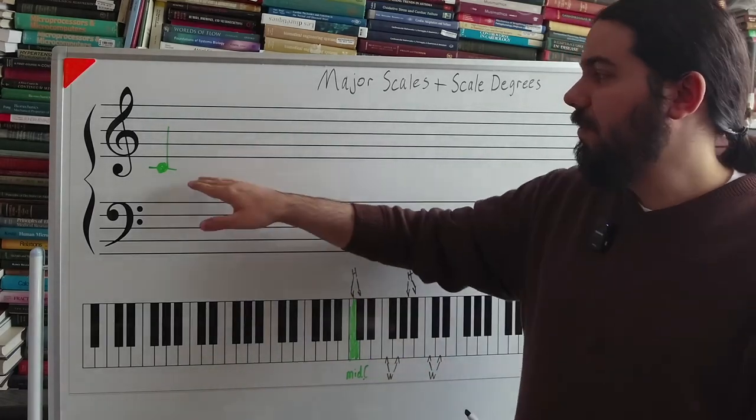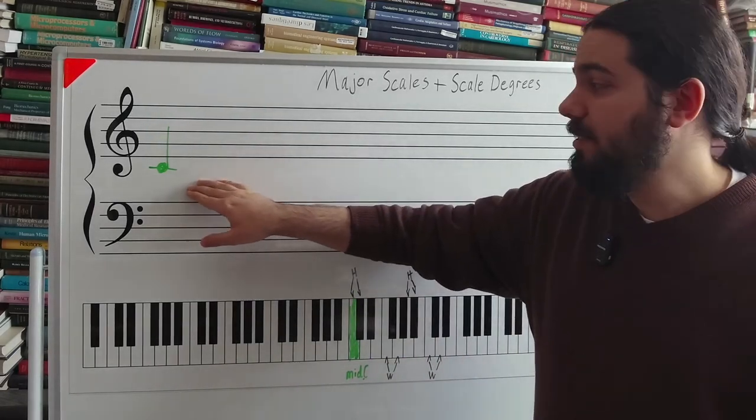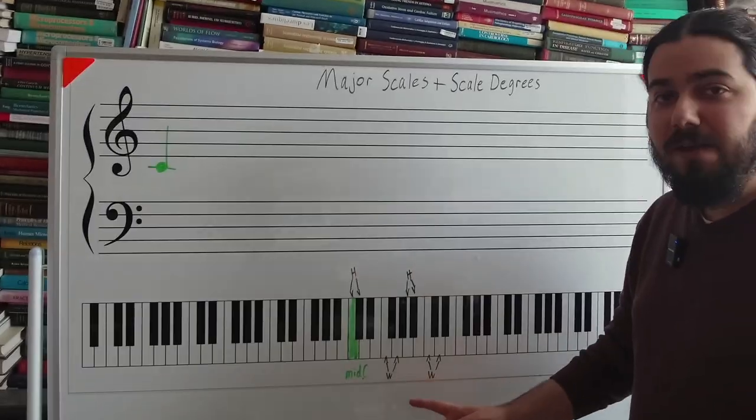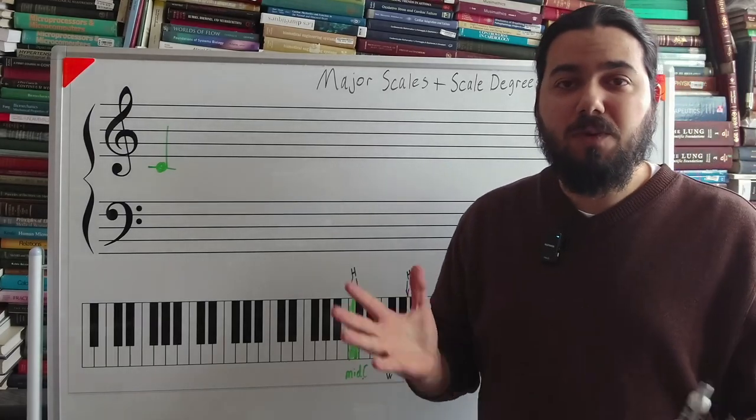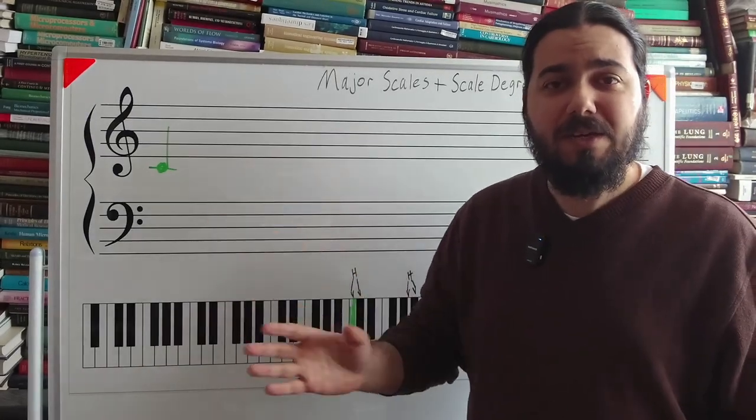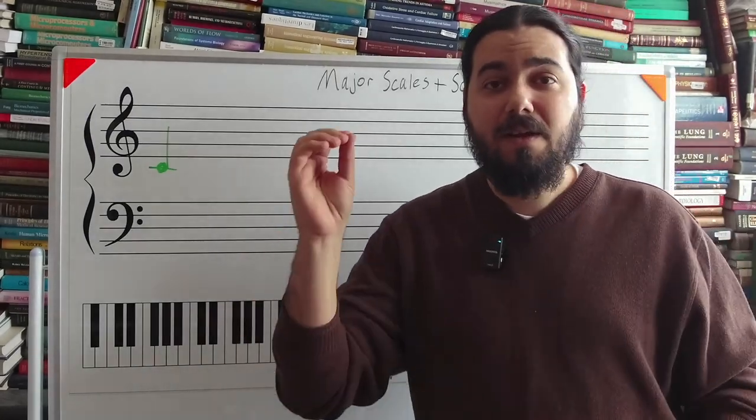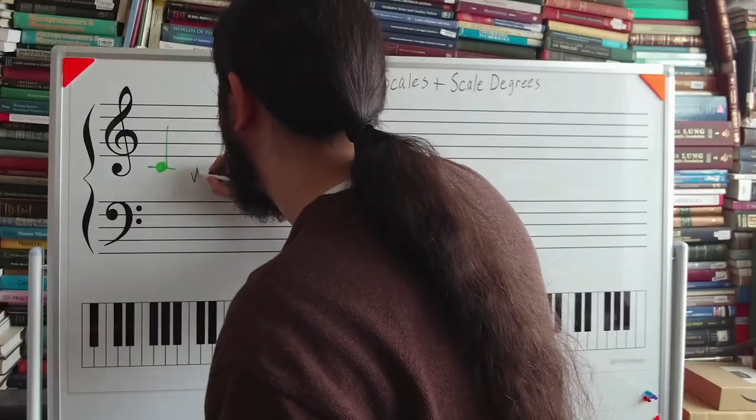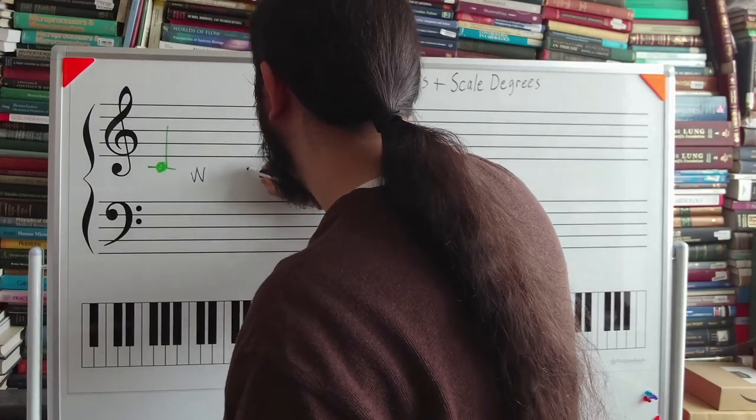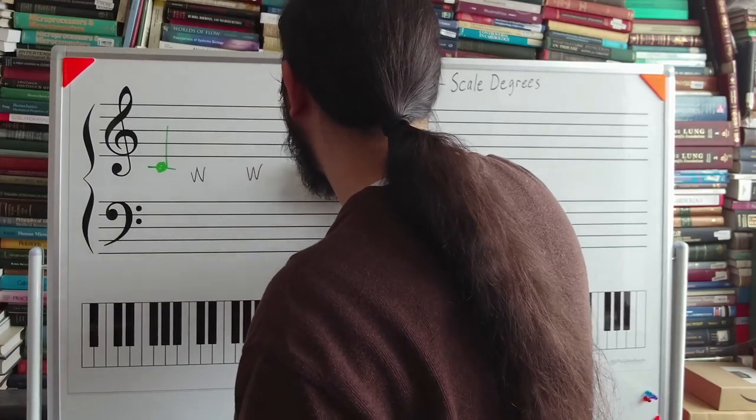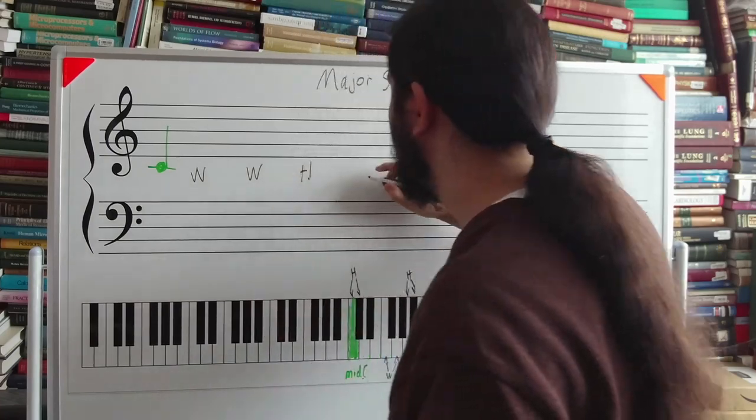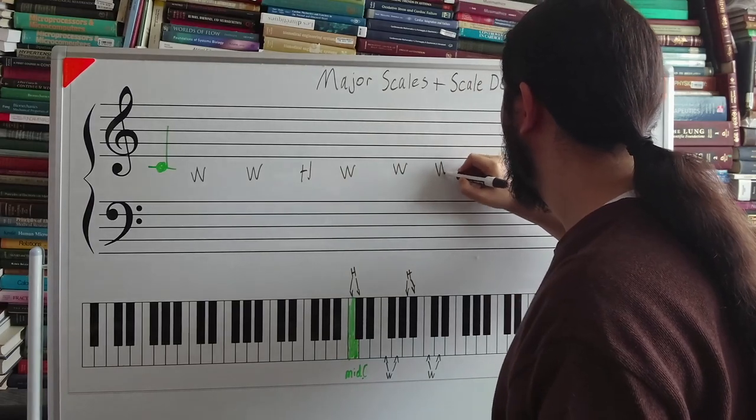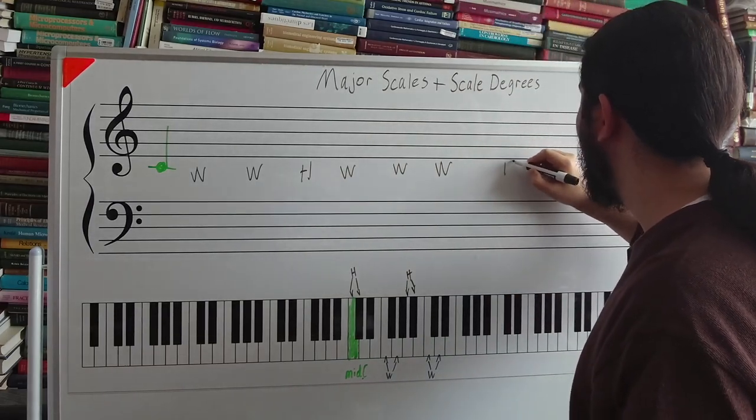So right now we're just going to go and construct our major scale based on C. The reason why I discussed half steps and whole steps is because when you build a major scale, you need to follow a specific pattern of whole steps and half steps. And that pattern is this: whole step, whole step, half step, whole step, whole step, whole step, half step.